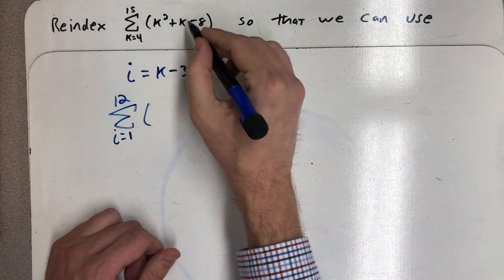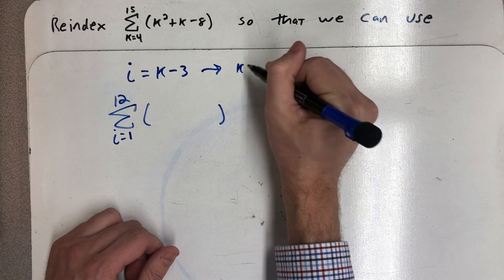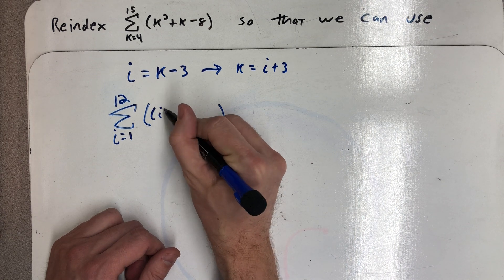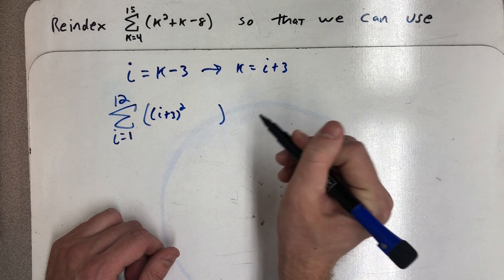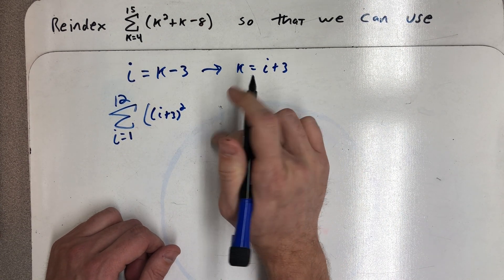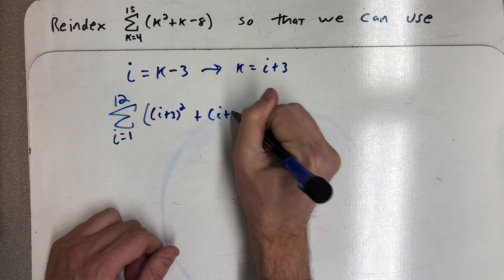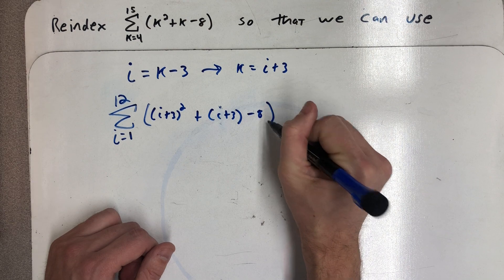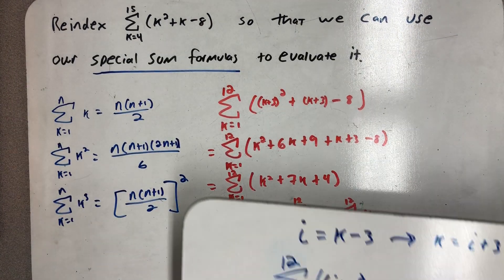Well the formula on the inside was all about k, so I can solve this for k and I get i plus 3. So now wherever there was a k I can replace it with an i plus 3.